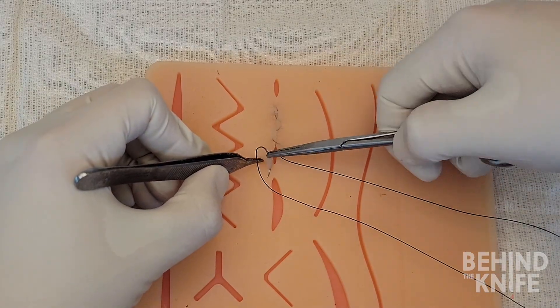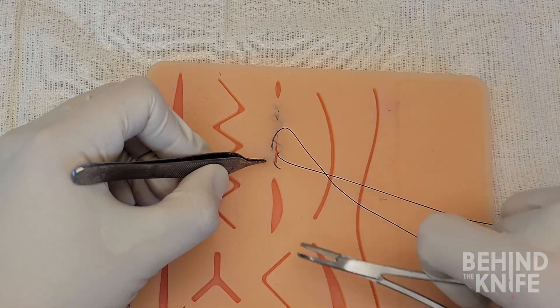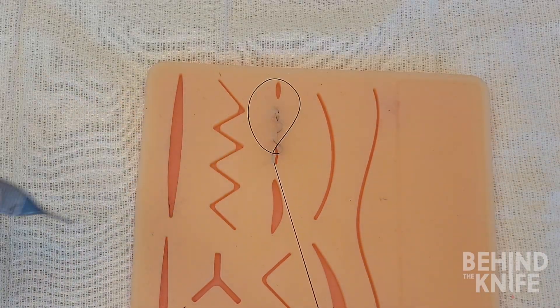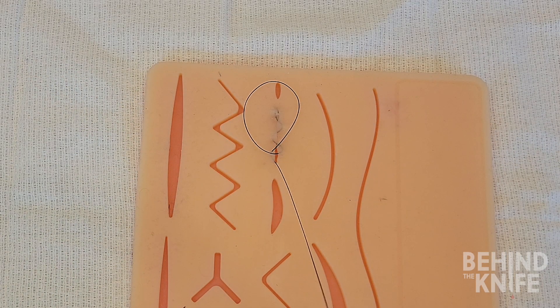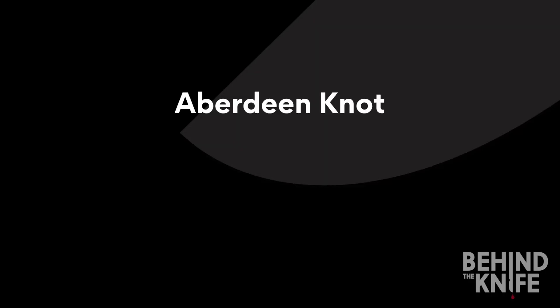As we make our throw for the final bite, we will leave a loop of suture to tie our stitch. Now you can instrument tie at this point as we've done in the simple running suture video, but for this video I will be demonstrating an Aberdeen knot.